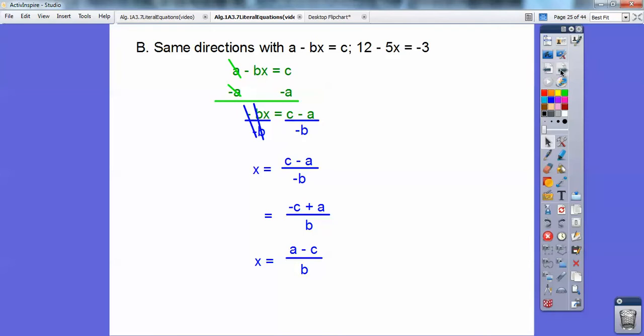So there's part of the answer right there. That's the first part we solved for x. x equals a minus c over b. So now, we have 12 minus 5x equals 3. Remember, the 12 is a, and then the b is the 5, and the c is the negative 3.